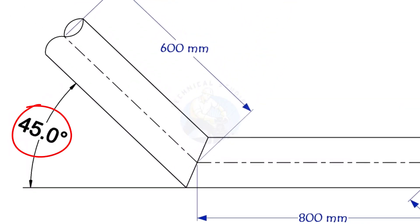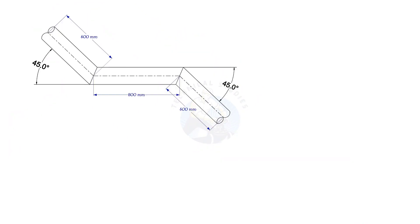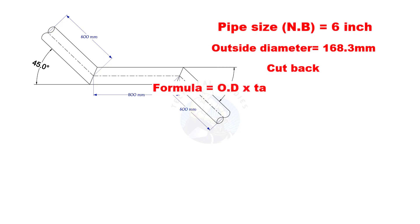The angle of the miter is 45 degree. This method is suitable for cutback of any degree. The outside diameter of a 6 inch pipe is 168.3 millimeters. Cutback is O D multiplied by tan half degree, divided by 2.